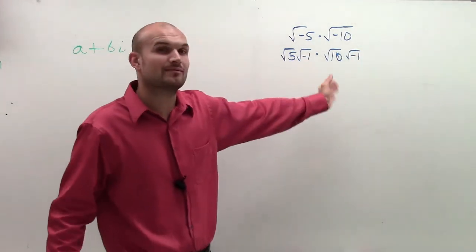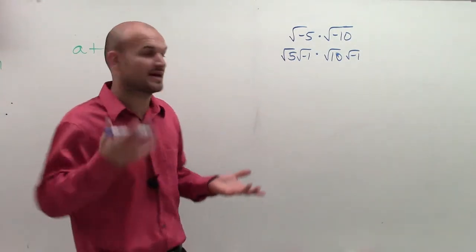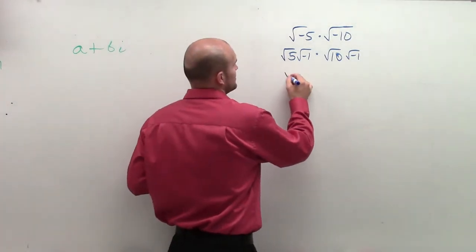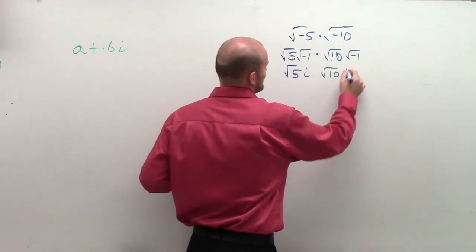Then what that tells us is, remember, we represent the square root of negative 1. We don't have a number in the real number system for that, so we can denote that with i. So I could say the square root of 5 times i and the square root of 10 times i.